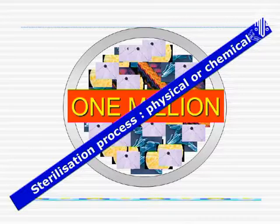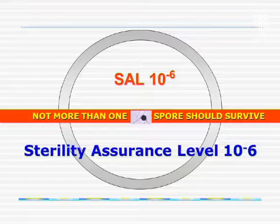It may not be practically possible to remove everything. So we have a sterility assurance level. If you leave one million spores in, the maximum allowed to survive is one — that is, one in one million. That is the standard you should maintain for sterilization, and it is what is needed for ophthalmic practice.